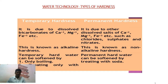Differences: temporary hardness is due to the presence of bicarbonates of calcium and magnesium, and permanent hardness is due to the presence of chlorides and sulphates of calcium and magnesium. Temporary hardness is sometimes called alkaline hardness, while permanent hardness is called non-alkaline hardness. Temporary hardness can be removed by boiling, but permanent hardness cannot be removed by boiling — instead, treatment with soda is needed.